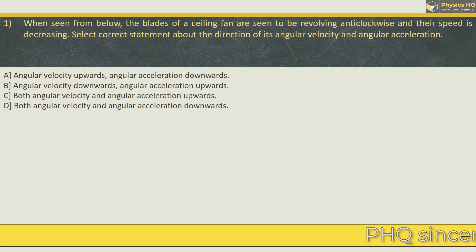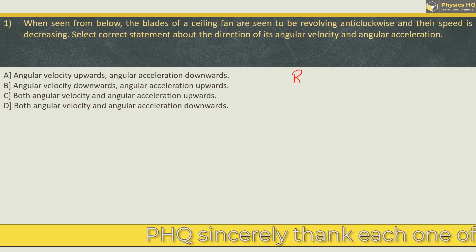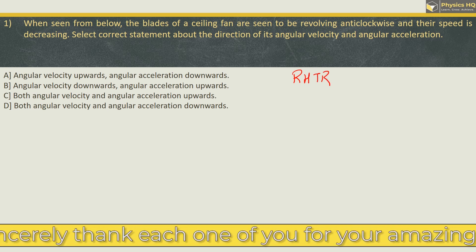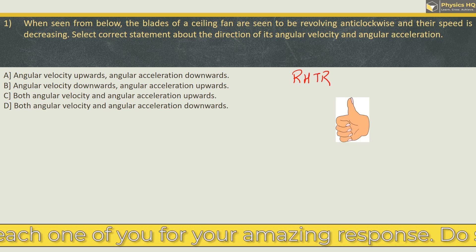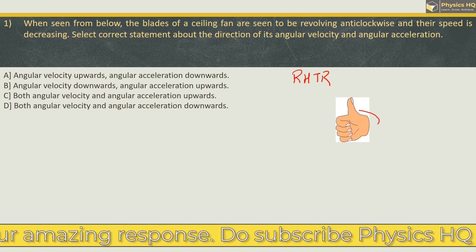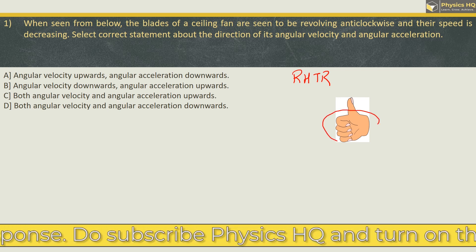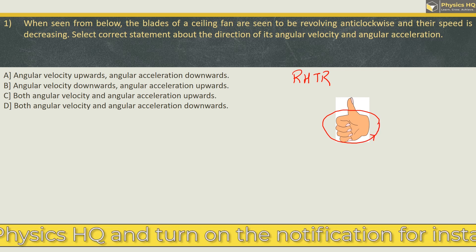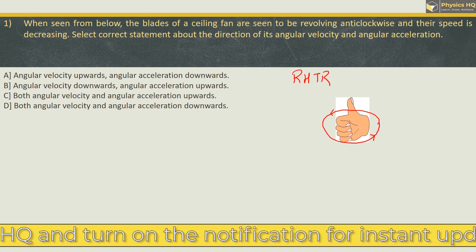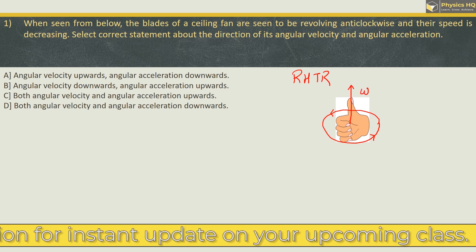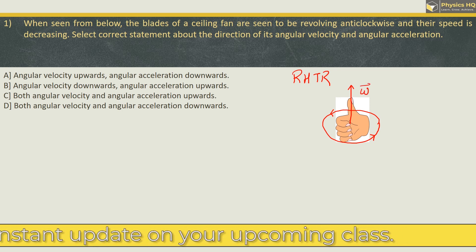To find the direction of angular velocity, let us understand what is the right hand thumb rule that will define the direction of angular velocity. The right hand thumb rule says that if we curl the fingers of our right hand in the direction of the motion of the particle along the circle, then the thumb will point to the direction of angular velocity omega.